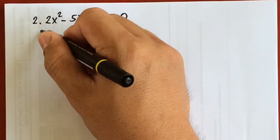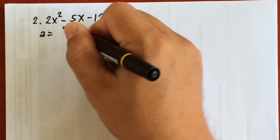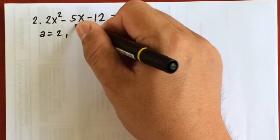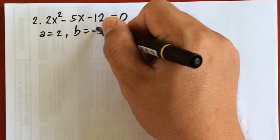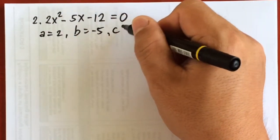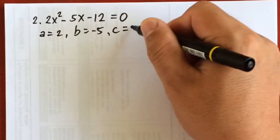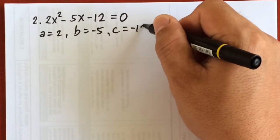Number 2: 2x squared minus 5x minus 12 equals 0. Here a is equal to 2, b is equal to negative 5, and c equals negative 12.